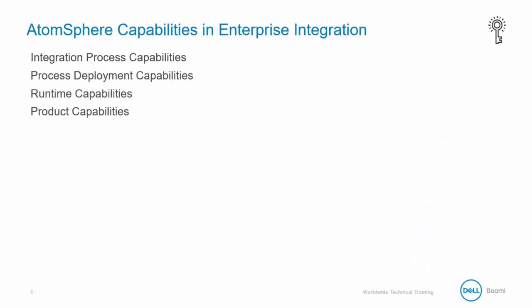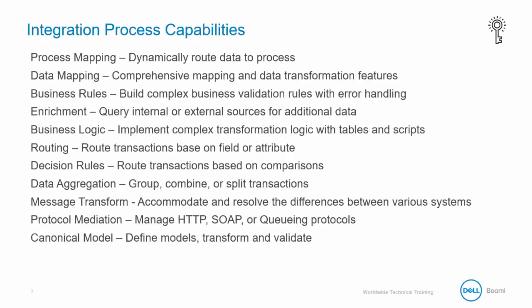AtomSphere is a multi-purpose and useful tool, but you won't use a utility knife to do everything. So in this section, we want to point out how to use Boomi's essential AtomSphere capabilities in enterprise integration. We want to break down the capabilities into four different sections: Integration Process Capabilities, Process Deployment Capabilities, Runtime Capabilities, and Product Capabilities. In the realm of Process Deployment and Runtime Capabilities, we want to review some of the highlights.